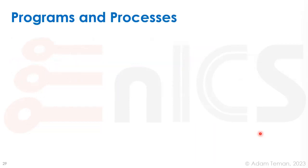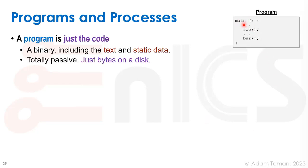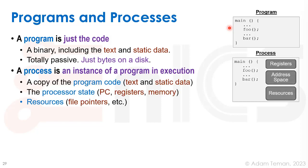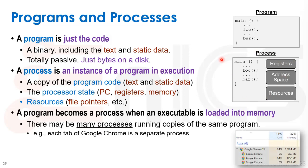What is the difference between a program and a process? A program is just the code — something like a main with some functions — it's a binary that includes the text and static data, completely passive, just bytes sitting on a disk. A process, on the other hand, is an instance of a program in execution: a copy of the program code in memory, the processor state including the program counter, registers, memory, and resources like file pointers. A program becomes a process when an executable is loaded into memory.